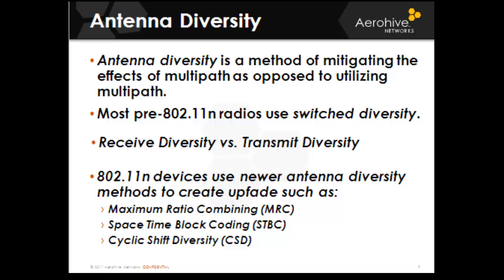Receive diversity versus transmit diversity: When receiving, the client decides which antenna is used for reception based on signal strength. When transmitting, it transmits back out that same antenna. 802.11n devices use methods that create upfade such as maximal ratio combining, space-time block coding, and cyclic shift diversity.